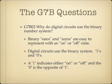Why do digital circuits use the binary number system? Binary ones and zeros are easy to represent with an on or off state. A one indicates either on or off, and the zero is the opposite of one. The binary one and zero is easy to represent with an on and off state.